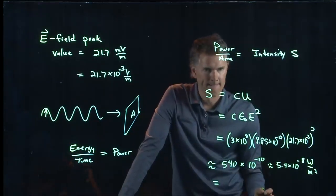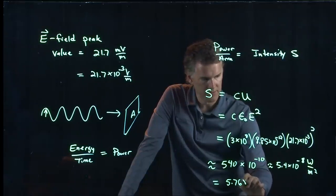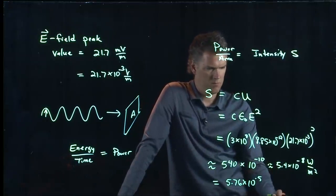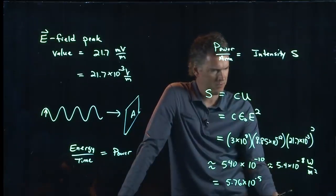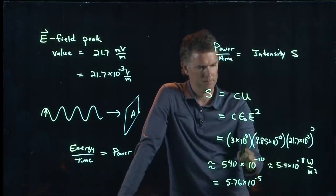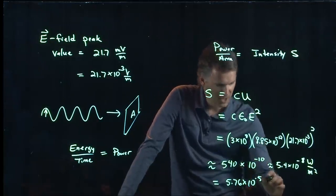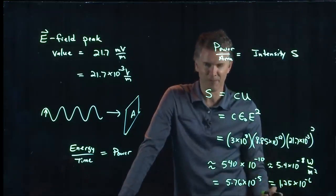Did anybody punch this into your calculator and get a real answer? What'd you get? 5.76 times 10 to the negative 5? Okay. Can anybody else confirm that number? You got what? 1.25 times 10 to the negative 6? All right, we got three different answers so far.